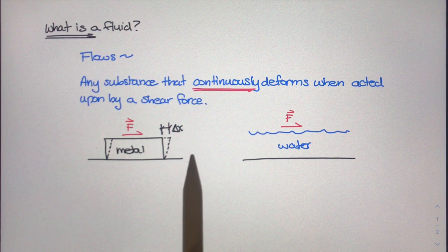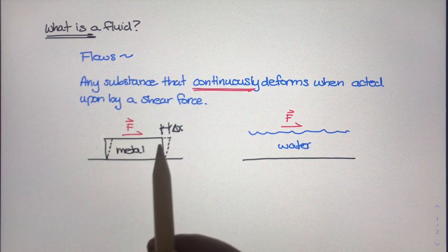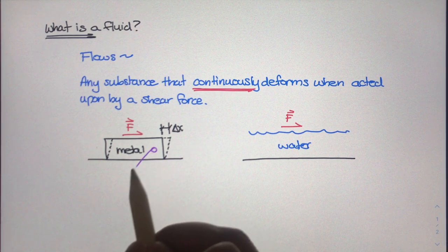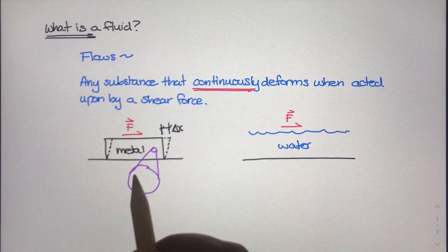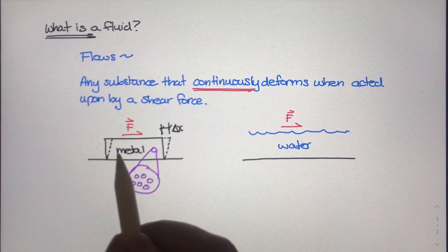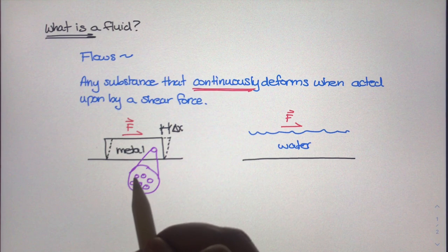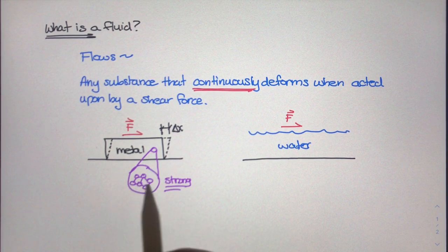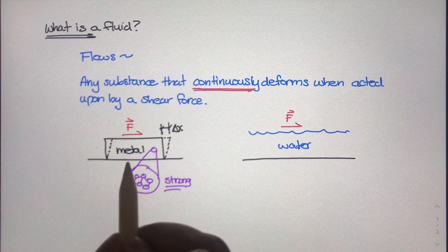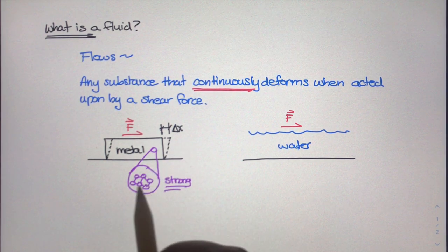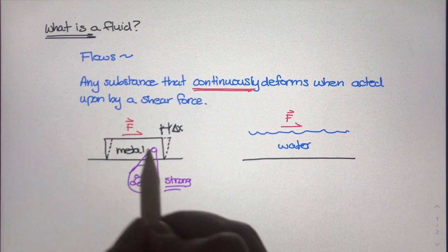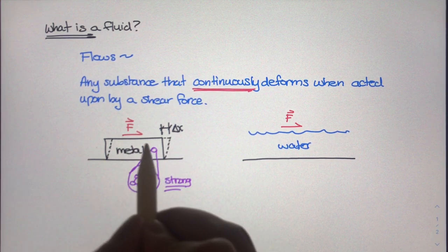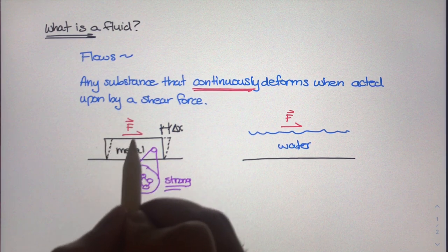Okay, so here's a question. Why is it that the metal block will stop deforming after some displacement? Well, if we zoomed into this metal block, we could see all the molecules that make up this metal box. The molecular bonds between these molecules are very, very strong. And they're strong enough to overcome this external shear force applied to it. So after some displacement, the bonds are going to have a much stronger force and that will counteract the shear force acting on the block.